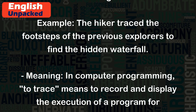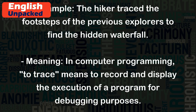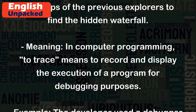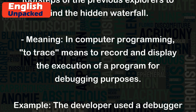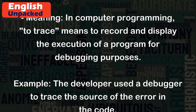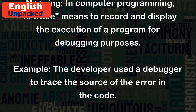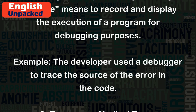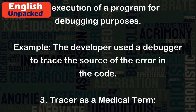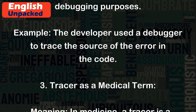In computer programming, 'to trace' means to record and display the execution of a program for debugging purposes. For example, the developer used a debugger to trace the source of the error in the code.